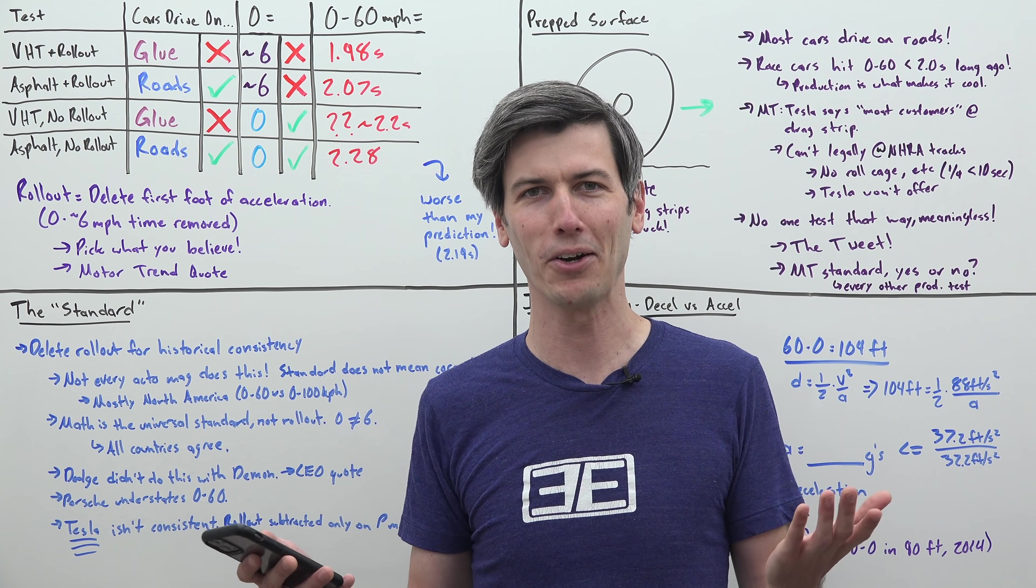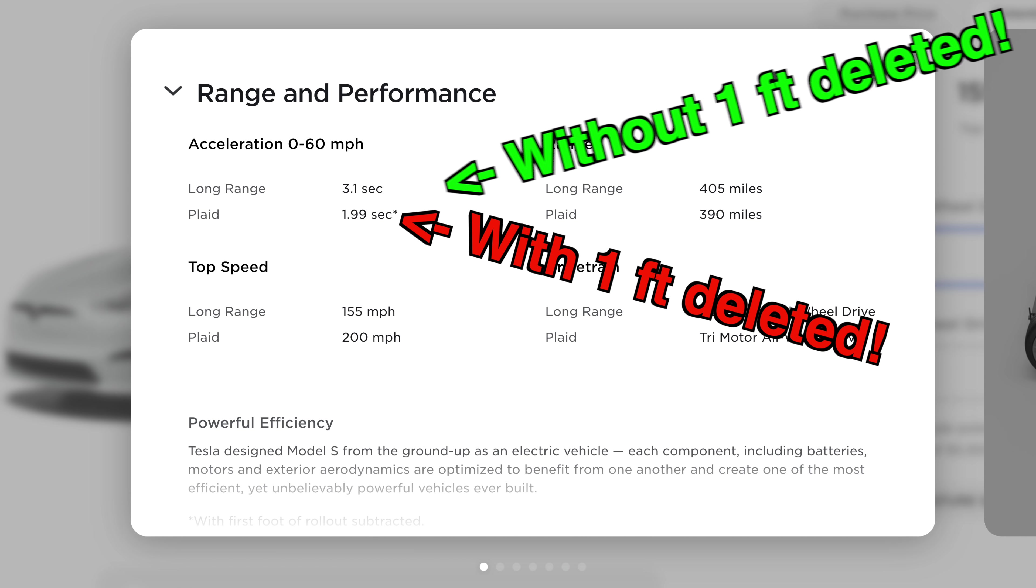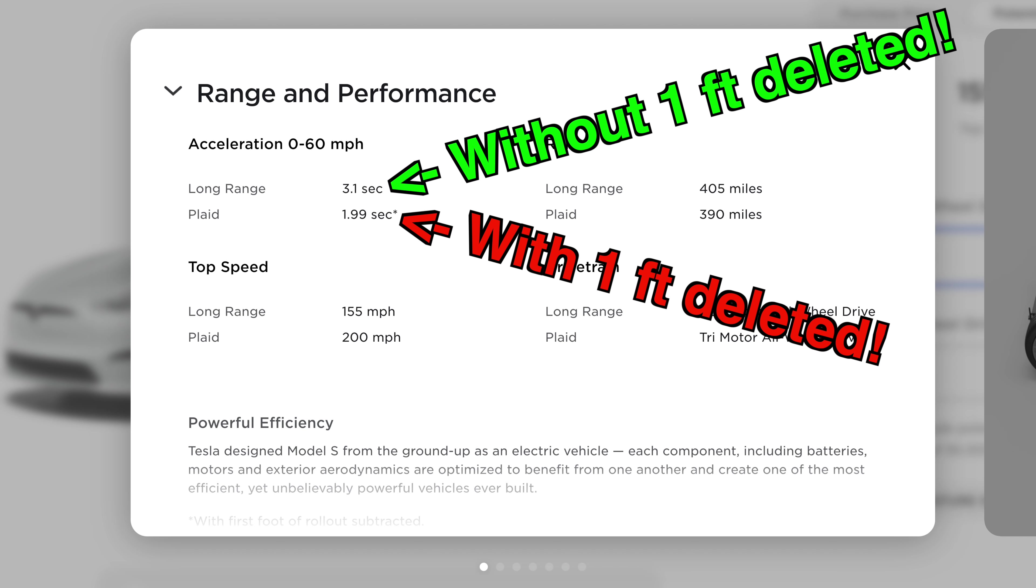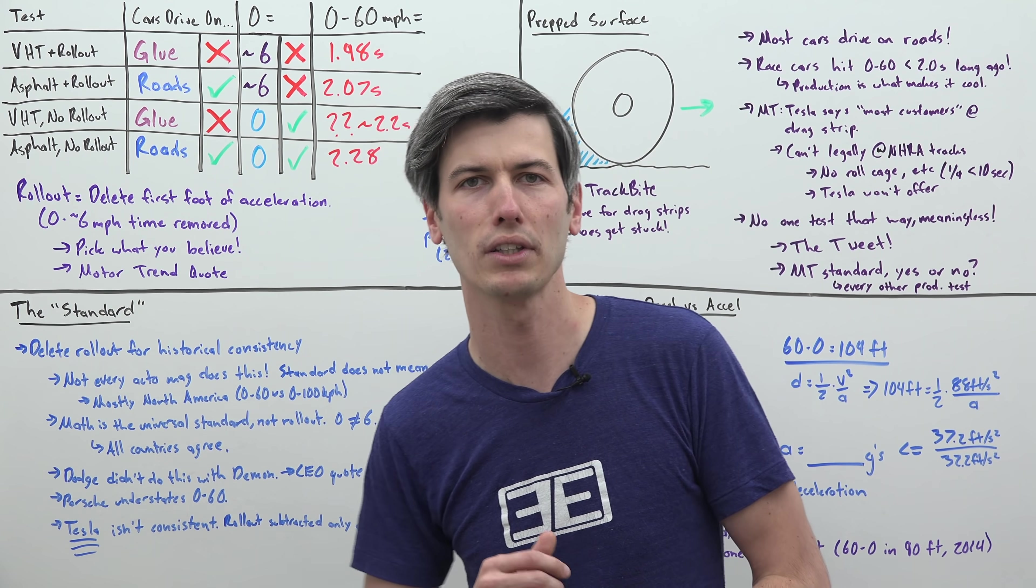On top of that, Tesla isn't even consistent in their own materials. For their performance models, they delete that first foot of rollout. For their non-performance models, they don't. So they're not even consistent; they're not even going by a standard as everyone likes to call it.